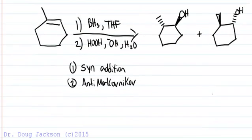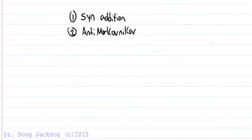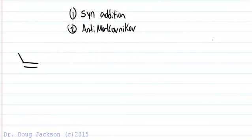So predicting the products is one thing, but then drawing the mechanism of this beast is another. So let's do it, let's not be afraid. If we start here, we know that we approach anti-Markovnikov and we are going to dump the pi electrons into the empty orbital on boron.